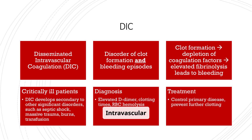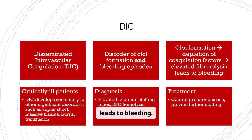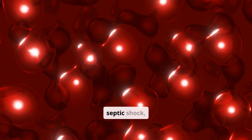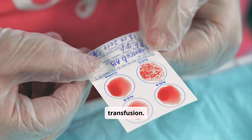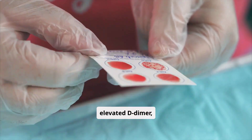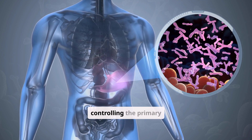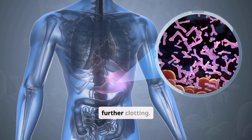Disseminated intravascular coagulation (DIC) is a disorder of clot formation and bleeding episodes. Clot formation leads to depletion of coagulation factors, and elevated fibrinolysis leads to bleeding. It develops secondary to other significant disorders, such as septic shock, massive trauma, burns, and transfusion. Diagnosis involves elevated D-dimer, clotting times, and RBC hemolysis. Treatment focuses on controlling the primary disease and preventing further clotting.